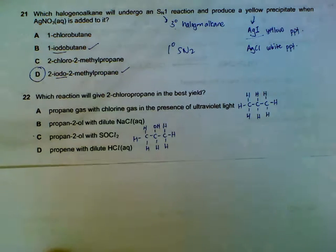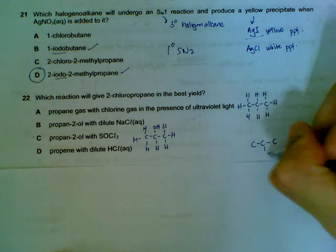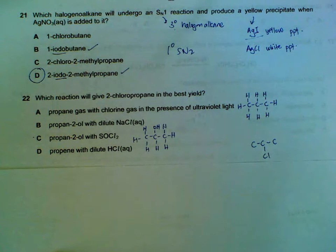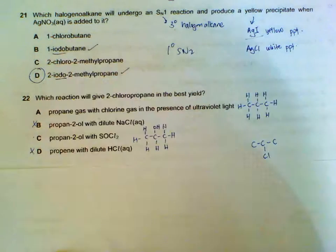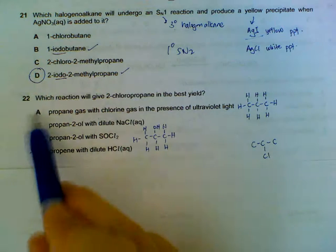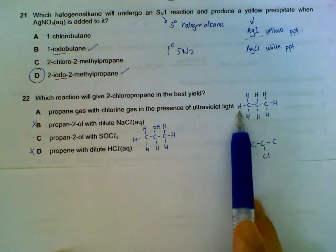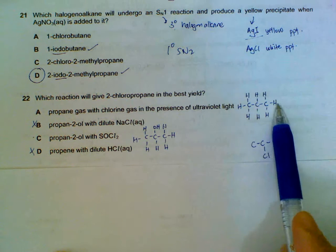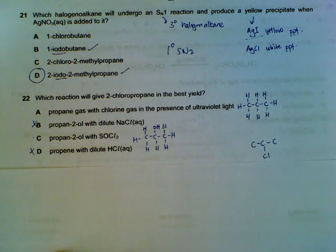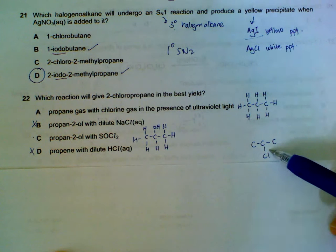Number 22, which one will give 2-chloropropane in the best yield? 2-chloropropane will have the chlorine attached to the second carbon. So B and C, if you are, in case you are wondering, B and C, there's no reaction. Sorry, B and D, there's no reaction. It's between A and C. A, reacting with chlorine gas with UV light is free radical substitution. The thing is, we cannot control where the chlorine will go, and we also cannot control how many of the hydrogen will be replaced by chlorine. So the yield will be quite uncontrollable in a way. We do not have high yield of 2-chloropropane.